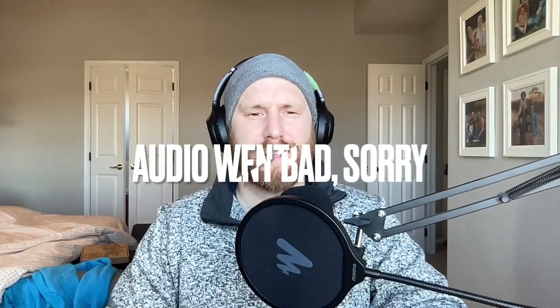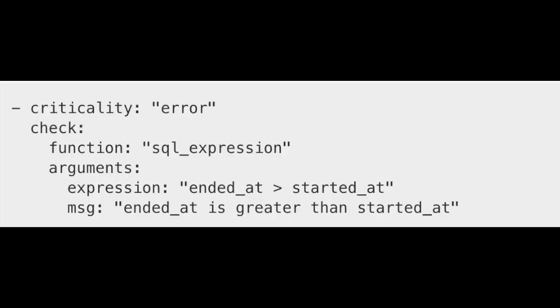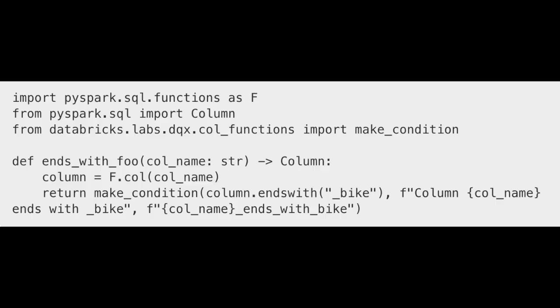One thing I wanted to show about DQX that I thought was pretty awesome — and I think you SQL folks will love this — DQX actually provides SQL data quality checks. The criticality is an error, and the check function equals sql_expression. The argument is actual SQL: we want 'ended_at' to be greater than 'started_at', meaning you can't end the bike ride before you start it. You can attach a message too. You can define data quality checks in SQL — how nice is that!